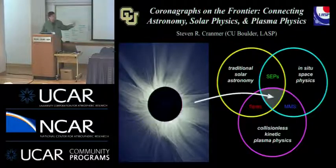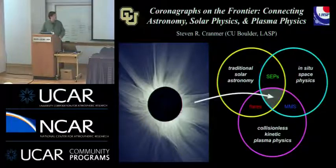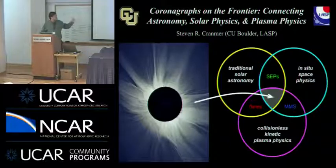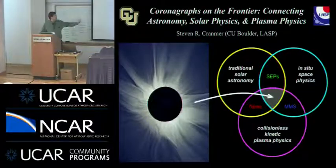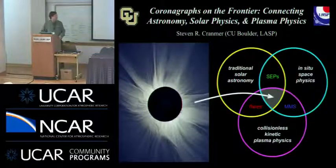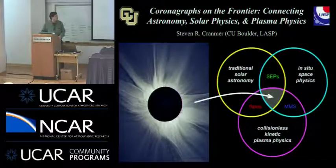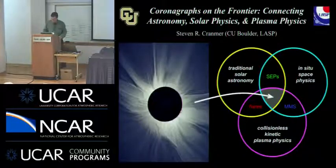Coronagraph science in the Venn diagram really links traditional solar astronomy — pointing your telescope at the sun — to in-situ space physics, sending a probe out to measure plasma in the solar wind. And there are definite links to high-powered, collisionless, kinetic plasma physics — frontier plasma physics topics. Coronagraphs can give you a little bit of everything.